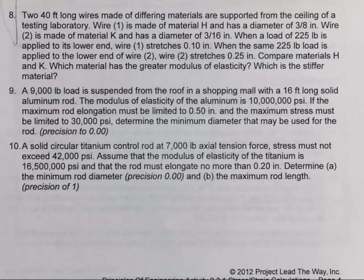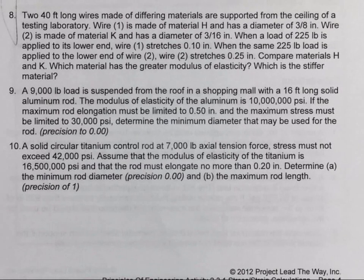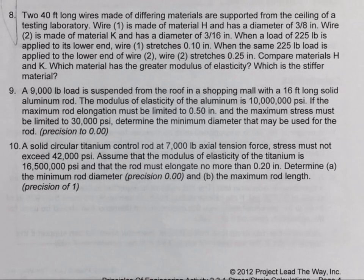You got two 40-foot long wires made of differing materials that are supported from the ceiling of a testing laboratory. Wire one is made of material H and has a diameter of 3/8 of an inch. Wire two is made of material K and has a diameter of 3/16 of an inch.